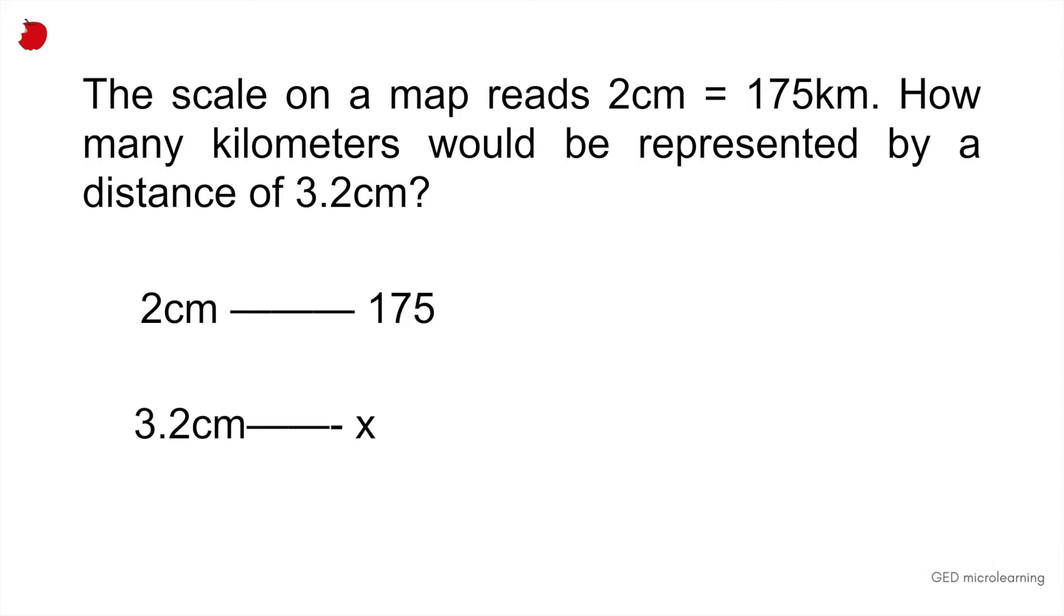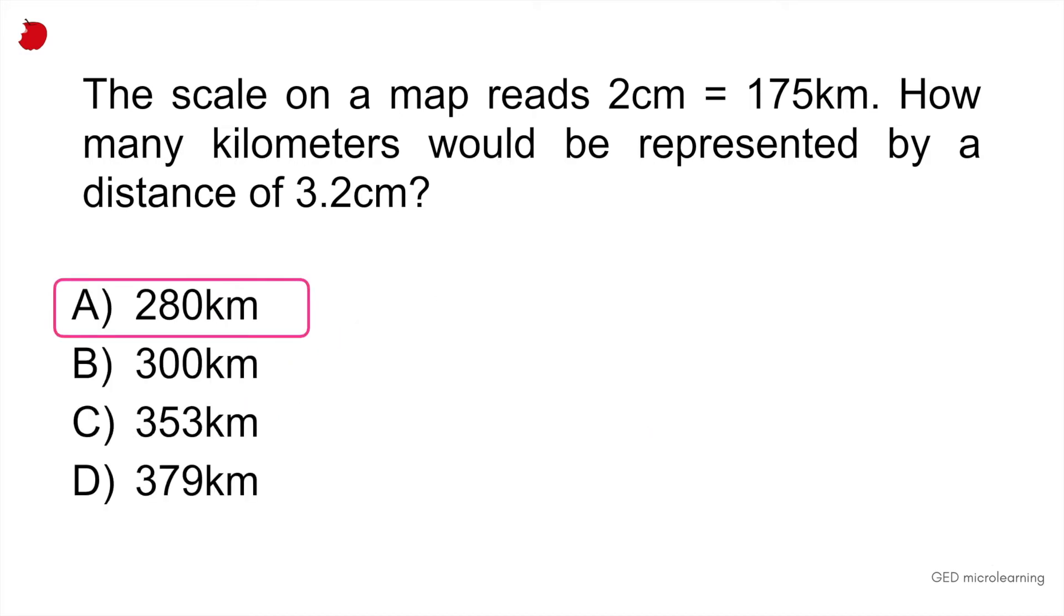The way you do it is that you multiply across like that, so x multiplied by 2, which would give you 2x, and then you multiply the 3.2 by 175. That gives you 560. And now all you have to do is solve for x. How do you do that? Divide both sides by 2. So that gives you that x is equal to 280 kilometers, which is answer A.